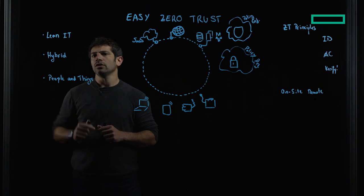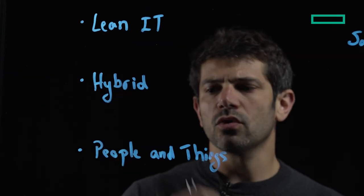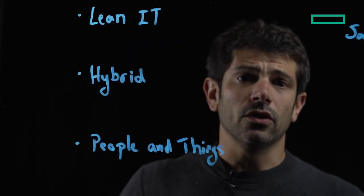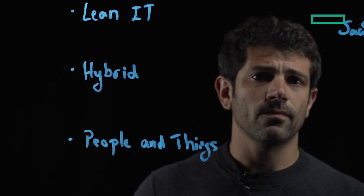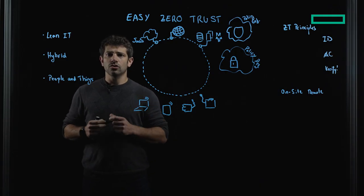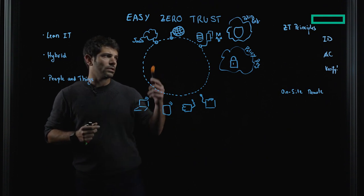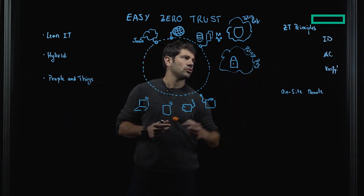Let's take as a starting point - we're a lean IT company, we have a hybrid workforce, and of course in our network we have people and things. As pretty much everyone, we're trying to adopt a Zero Trust strategy, and we're going to see here how we have our Zero Trust principles.